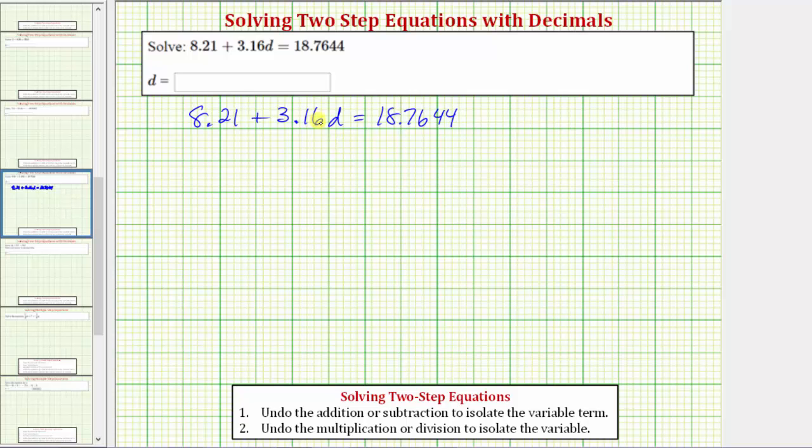The first step is to use addition or subtraction to isolate the variable term. We need to be careful here because it might be tempting to subtract 3.16 on both sides of the equation, but that will not work because the 3.16 is attached to the variable d by multiplication.